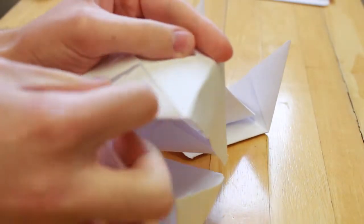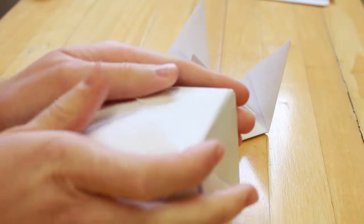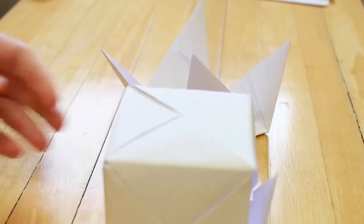Now slot in the 4th and 5th units to create this shape, and remember not to overlap the flaps.